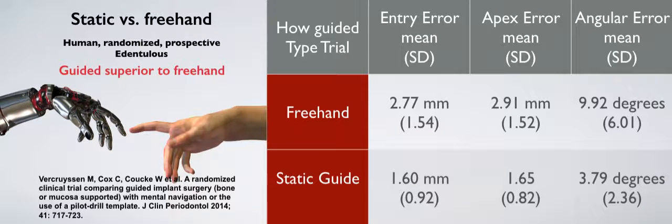This is another high level of evidence clinical trial done by Varacruzian. And this is the first trial that actually compared static guides to freehand. It's a high level of evidence human randomized prospective trial. These were edentulous patients. And what we see here when we compare freehand to static is that in every measure, when we go from freehand to static guide, we get higher accuracy and precision.